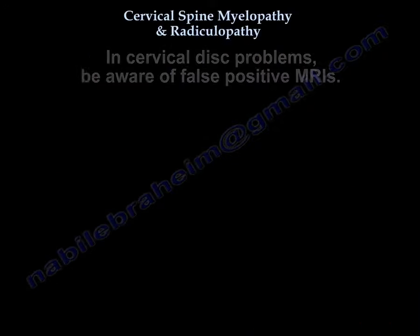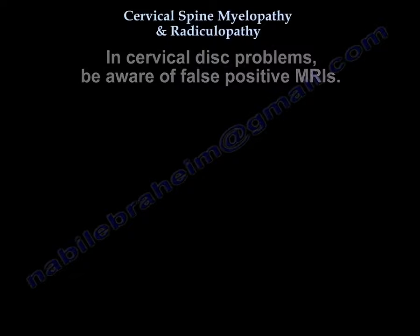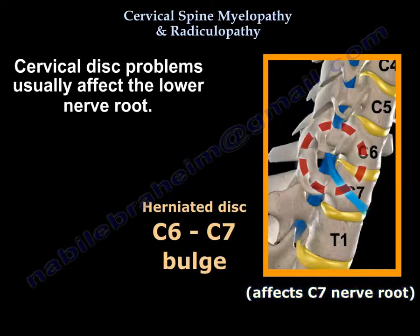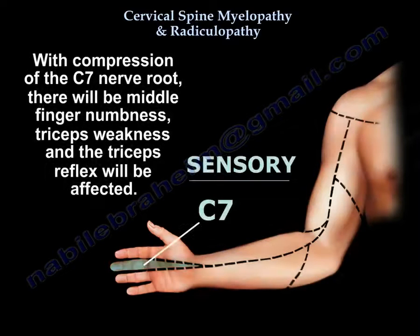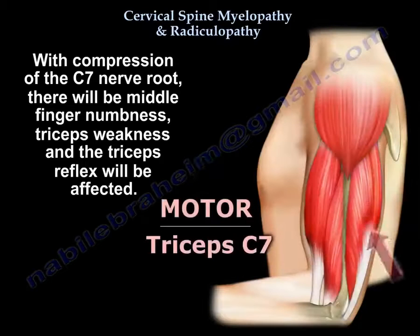In cervical disc problems, be aware of false positive MRIs. It usually involves the lower numbered root. So if you have a C6-C7 disc herniation, you will get the C7 nerve root — presenting with middle finger numbness, triceps weakness, and an affected triceps reflex.